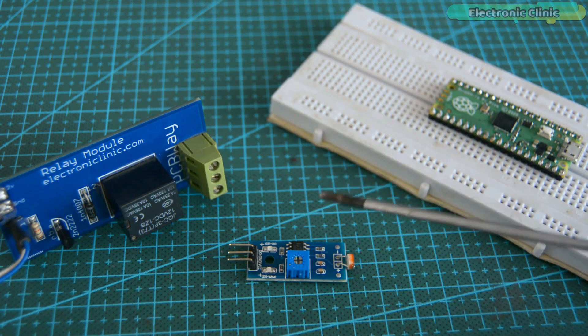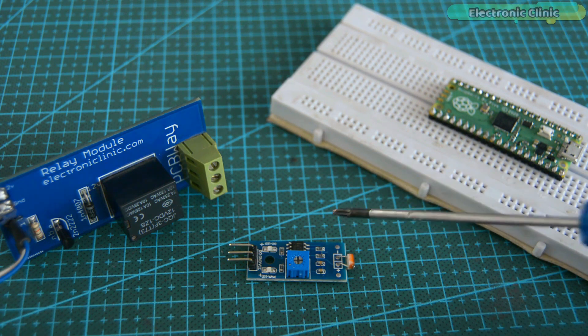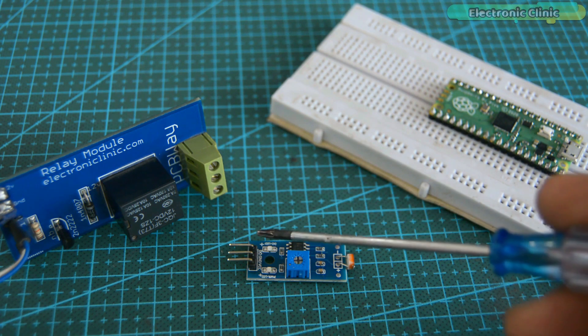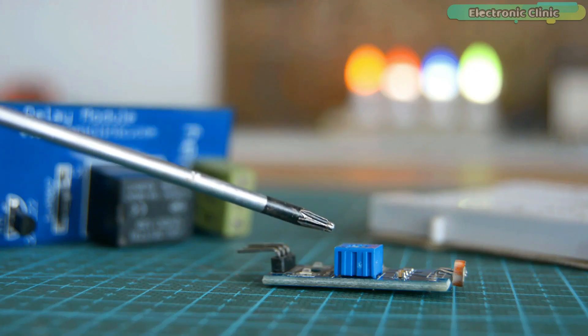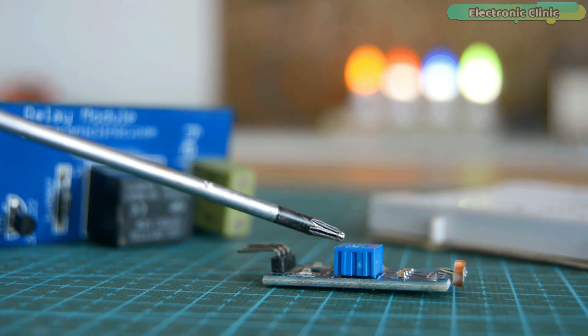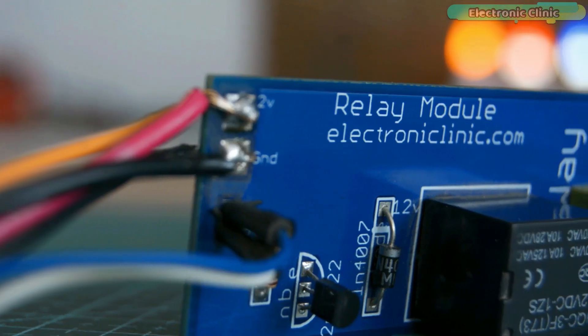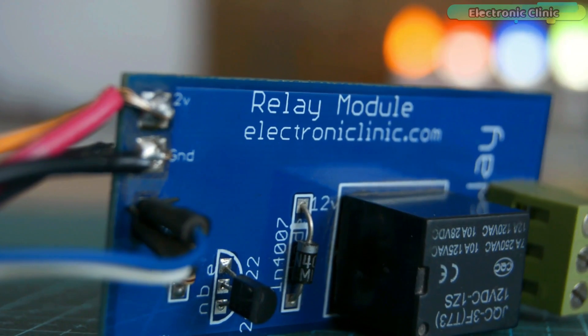This LDR sensor is designed in a way that it only gives one or zero as the output signal, which makes it really easy to use. The light intensity level can be adjusted using this blue color potentiometer. Now let's go ahead and take a look at the circuit diagram.